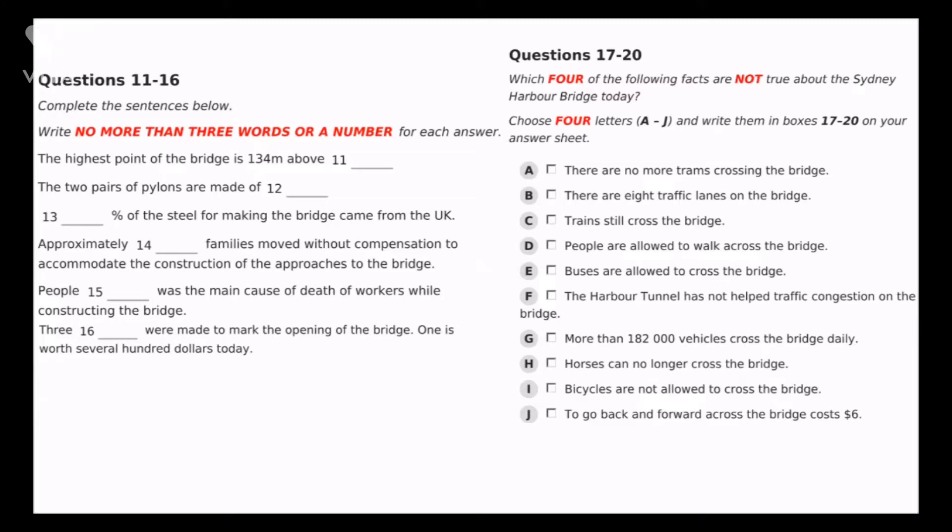One of the eastern traffic lanes is now a dedicated bus lane. The bridge is often crowded, and in 1992, the harbour tunnel was opened to help carry the traffic load. More than 160,000 vehicles cross the bridge each day. Before the harbour tunnel was opened, this figure was as high as 182,000, and would be much higher today if it were not for the tunnel. Pedestrians, horses, and push bikes are not allowed on the bridge anymore.